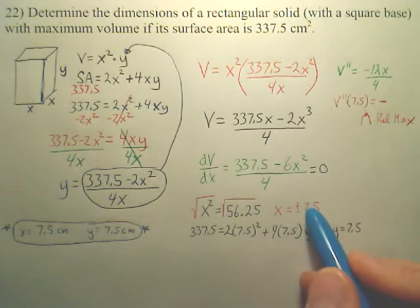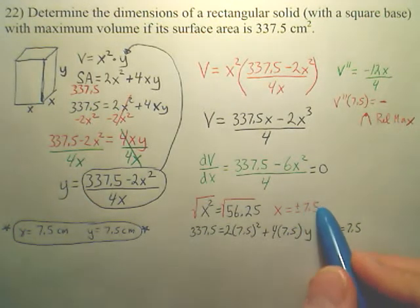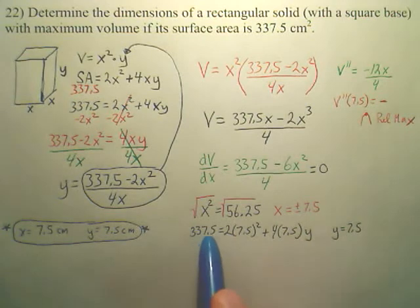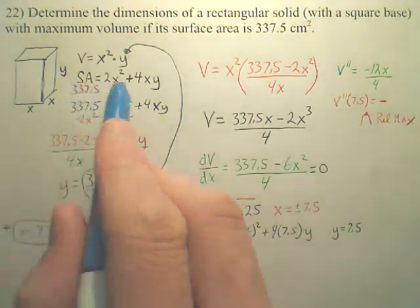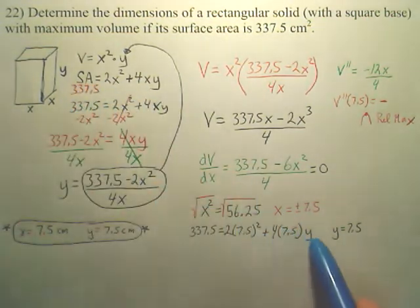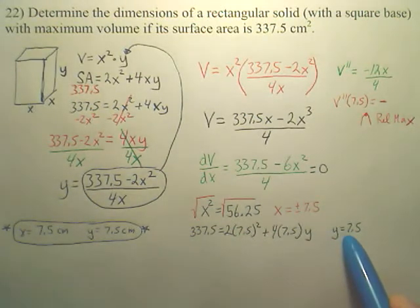So what I do is I basically take the positive 7.5, and what I did is I plugged it into the surface area equation right here and got my y. Now, before I did that, I probably should have verified it actually is the max.